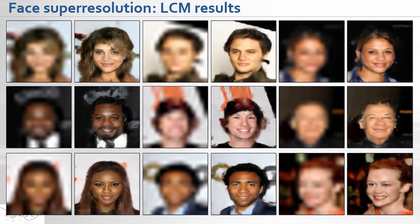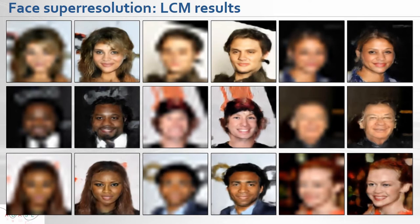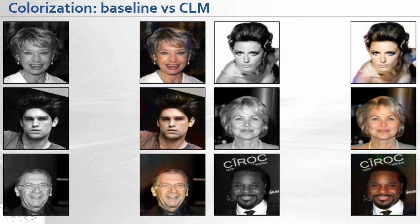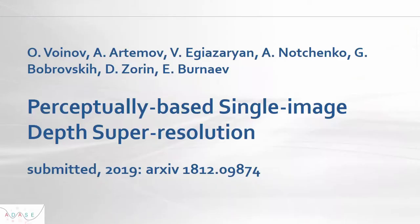For super resolution, of course it's impossible to significantly improve resolution when there isn't enough information, but we still interpolate something visually plausible. Our generative model is quite strong in imposing a good image prior. The same can be done with image colorization — our model provides a more reasonable distribution of colors than competing models.